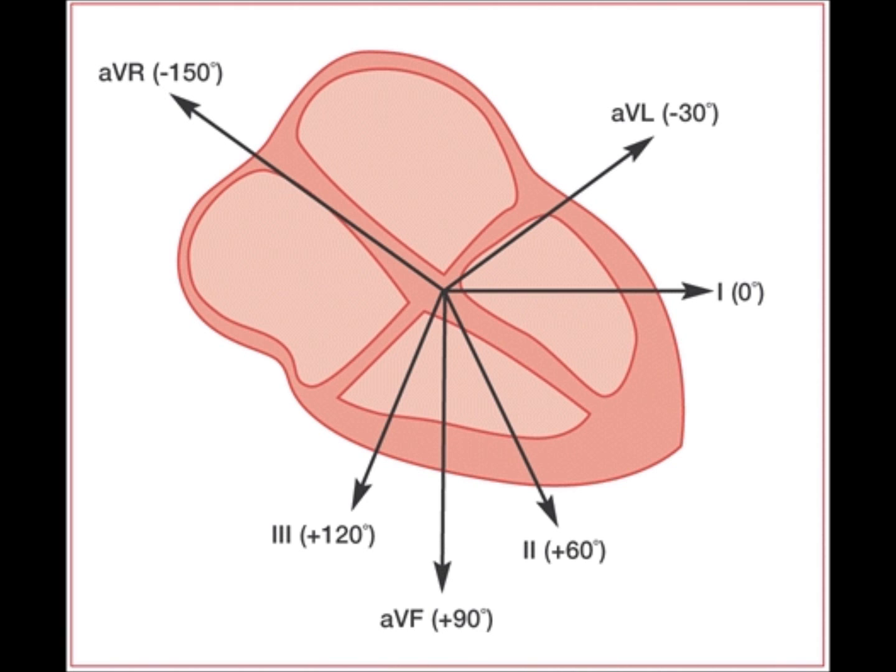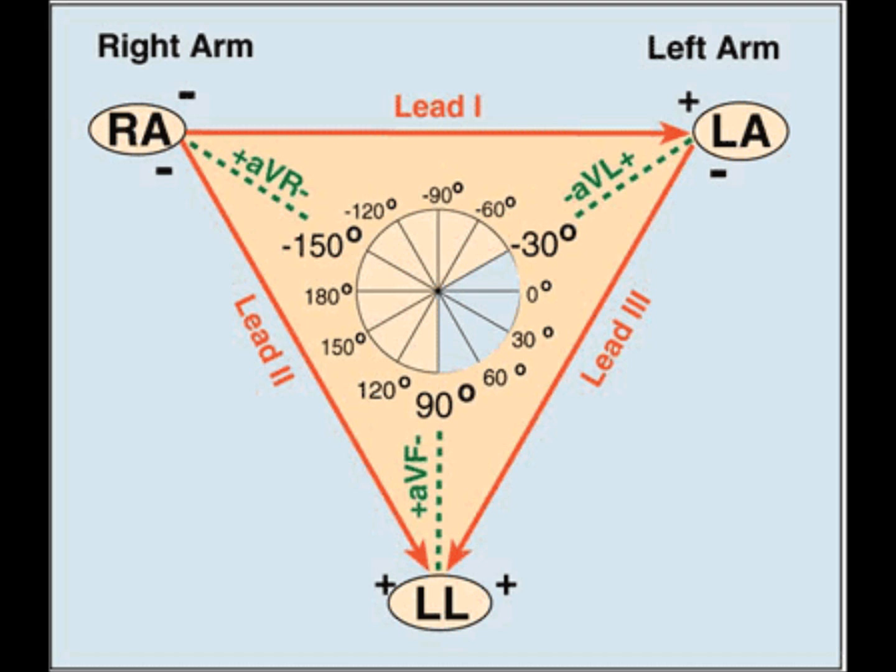Whereas lead two, lead three, and lead AVF look at the inferior aspect of the left ventricle. V1, V2 looks at the septal region of the left ventricle, and V3 and V4 looks at the anterior left ventricle.